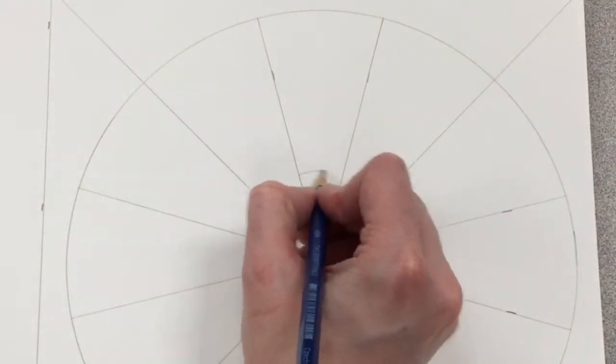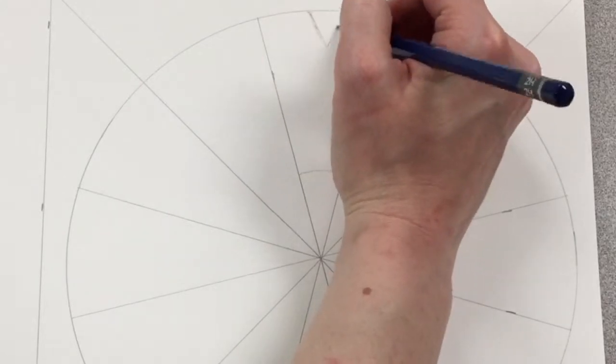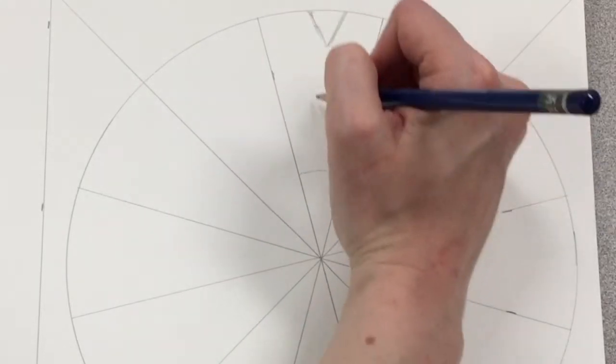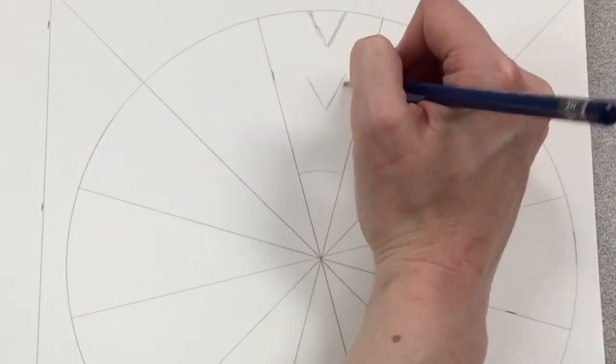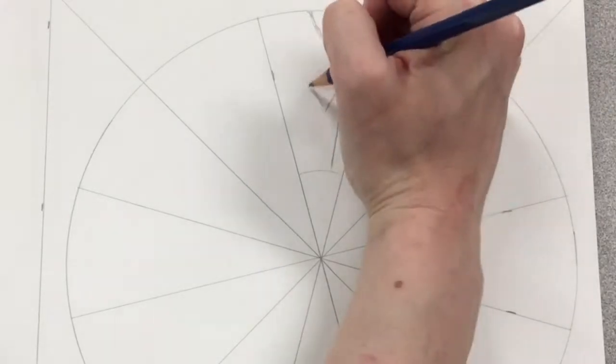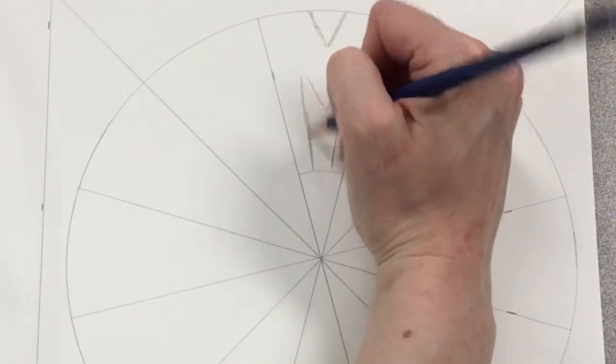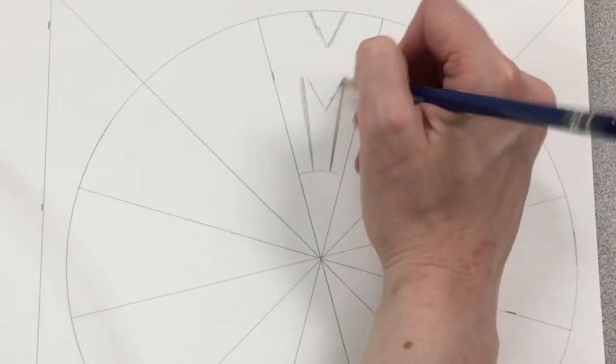Now I have 12 even sections in my color wheel, and I'm going to draw a design that fits inside one of the sections. In this case, I chose one of my initials, the letter M. I'm going to draw an M that fits inside one of my little wedge pieces.